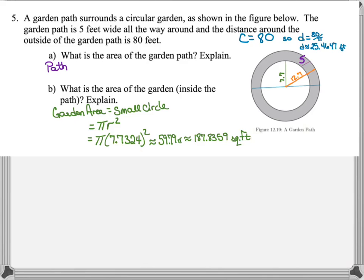So the pathway is going to be the difference between the large circle and the inner circle. The area of the large circle can be found by squaring the 12.7324, multiply by pi, and then subtracting the area of the garden, which we just found a moment ago.